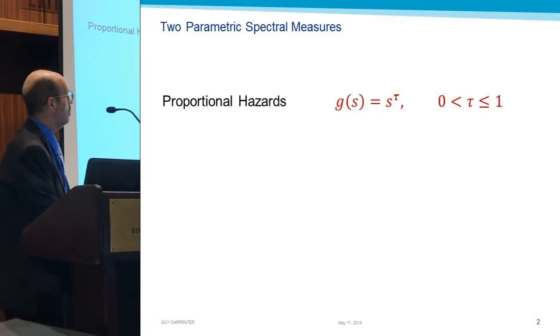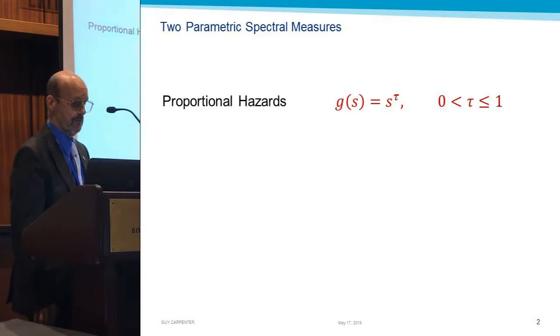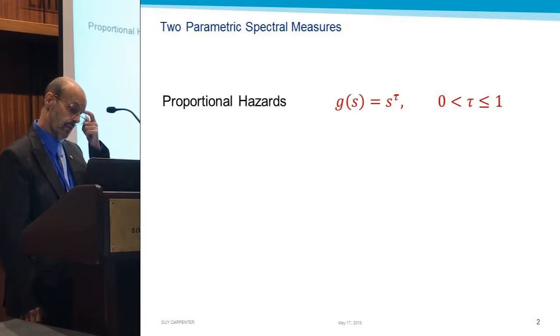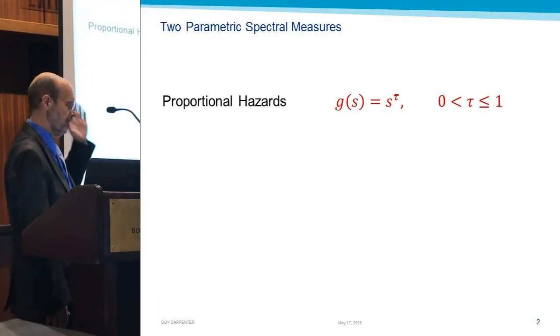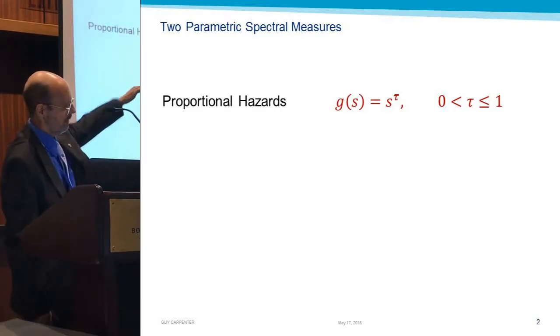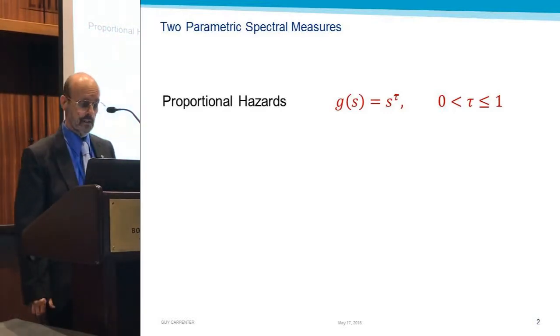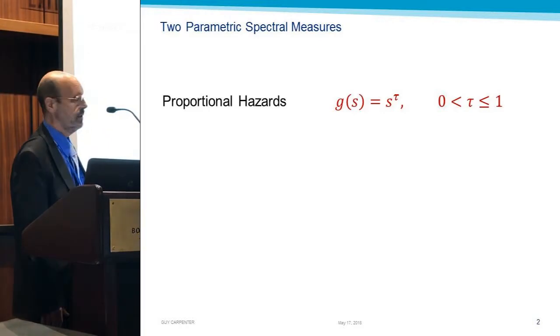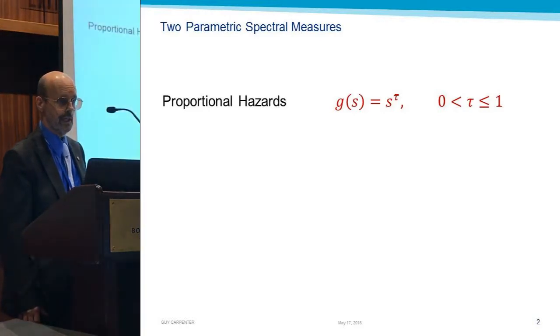Two famous ones, proportional hazards. The G function has a very specific form. It is s raised to some power between zero and one. And a half is very popular, the square root function. So imagine what's that going to look like? It's the right shape. It has that exponent, that tau, has to be between zero and one. If it isn't, it's not going to be concave.